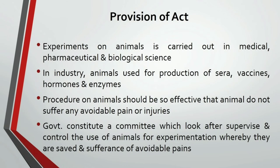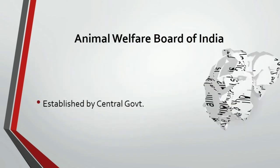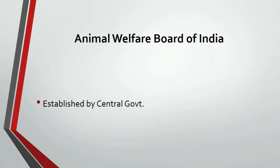Now let's see the provisions of this act. In different fields like pharmaceutical, medical, or biological science, animals are used in different kinds of experiments. Even different industries use them in the production of sera, vaccines, hormones, etc. The provision of this act says that experimental procedures should be such that they will not give any pain or suffering to the animals, or at least use a procedure which gives less suffering or pain to these animals. To look after this, the government constitutes a committee which supervises and controls the use of animals for experimentation.